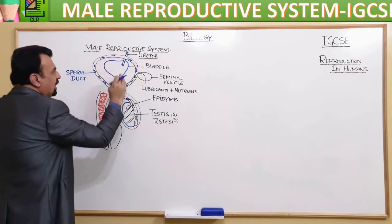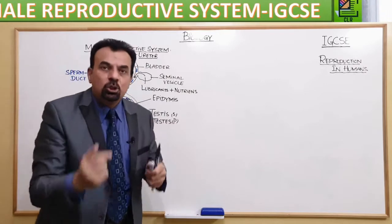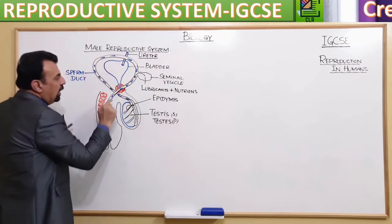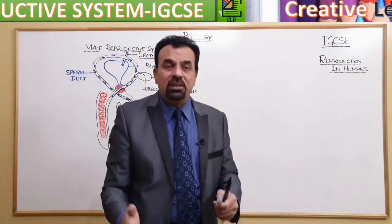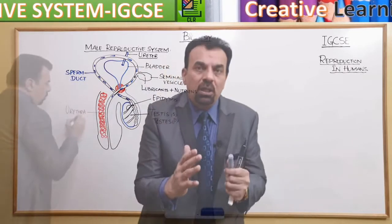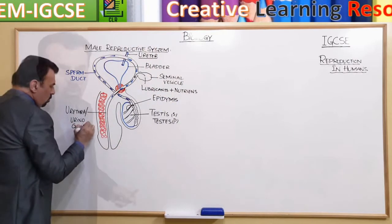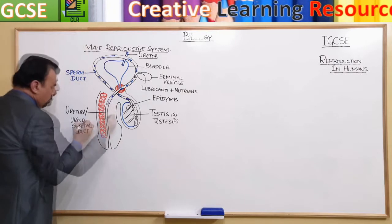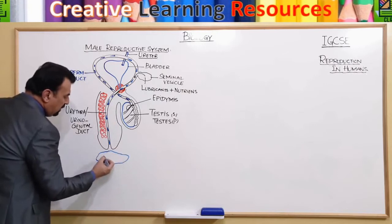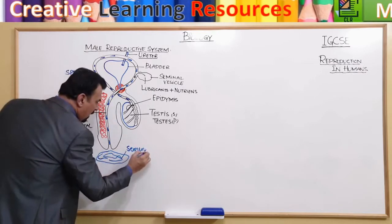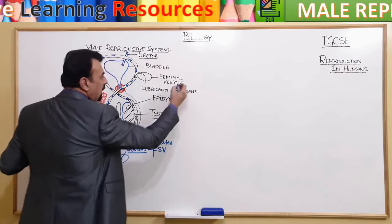The sperms then reach the part of the sperm duct that joins with the tube coming from the bladder. After this point, the tube is called the urinogenital duct, because it is the tube through which both urine and sperms can pass. For IGCSE students, you can just call it the urethra. The sperms eventually reach inside the female reproductive system as semen, which contains secretions from the testis as well as the seminal vesicle.